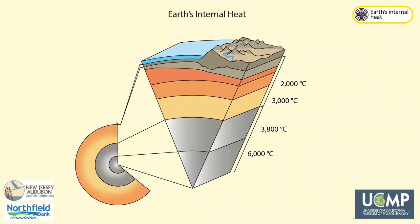Earth's internal heat is left over from when our planet formed and from radioactive decay of elements inside the Earth. While the Earth's internal heat contributes very little energy directly to the processes that shape the Earth's climate, it is the energy source that drives processes like plate tectonics and parts of the rock cycle.